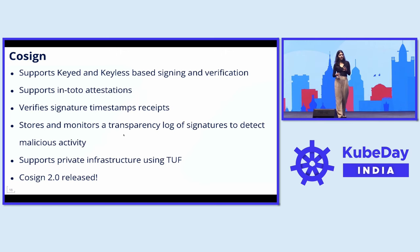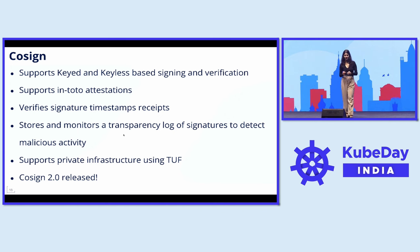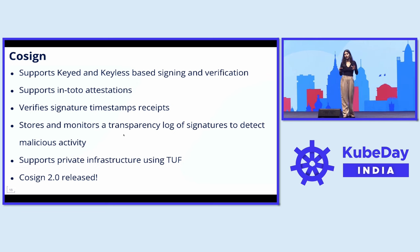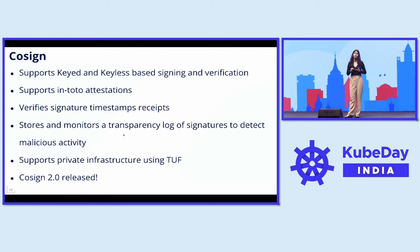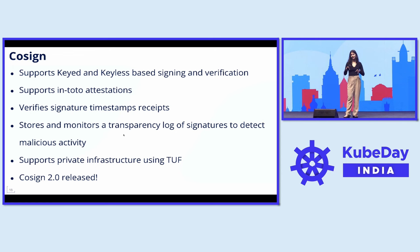Cosign adds certain features and complexities to image signing and verification. It supports both keyed and keyless-based signing and verification, and even supports in-toto attestations. Cosign helps you store signature timestamps and verify that the signature was created at the expected point in time. It also supports a transparency log of signatures, which can be used to monitor and detect malicious activity. If you don't want this transparency log to be public, you can even have a private infrastructure using TUF. Both tools have new releases with some really cool features.